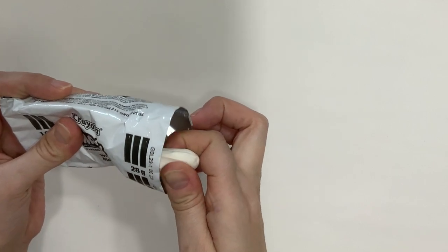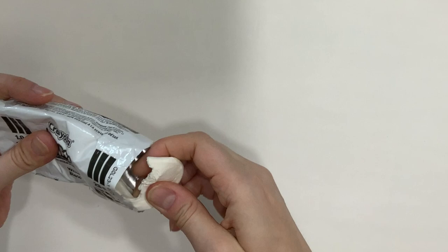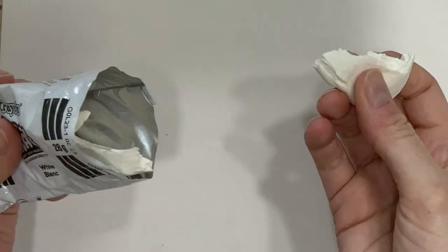When you're ready to use the Model Magic, only take out what you need. That should be a little bit at a time. Leave the rest of it in the bag or the wrapper. That way the rest of it stays nice and soft and doesn't dry out.